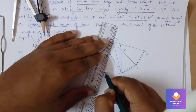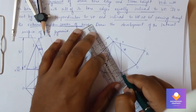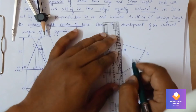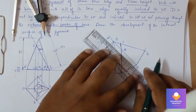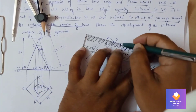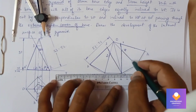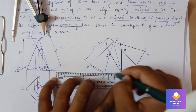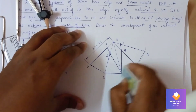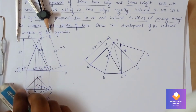Now dark the retained cut portion on the development. Darken the cut portion, then erase the construction arcs that were drawn. That completes the problem.